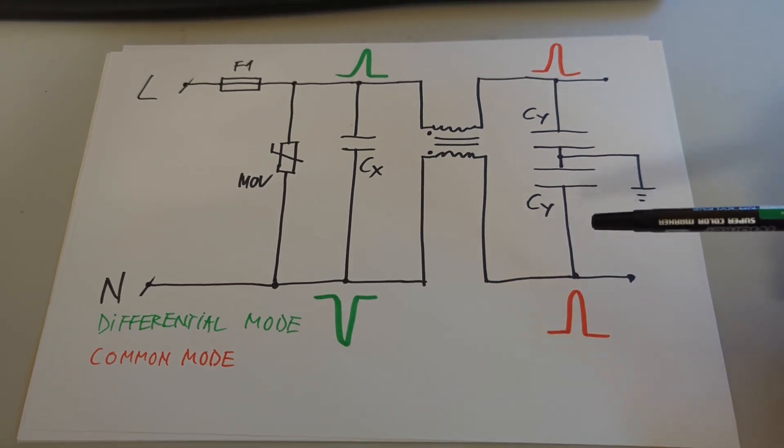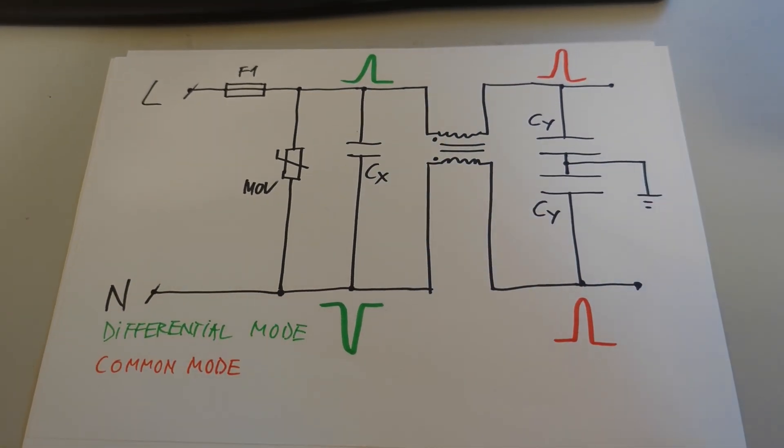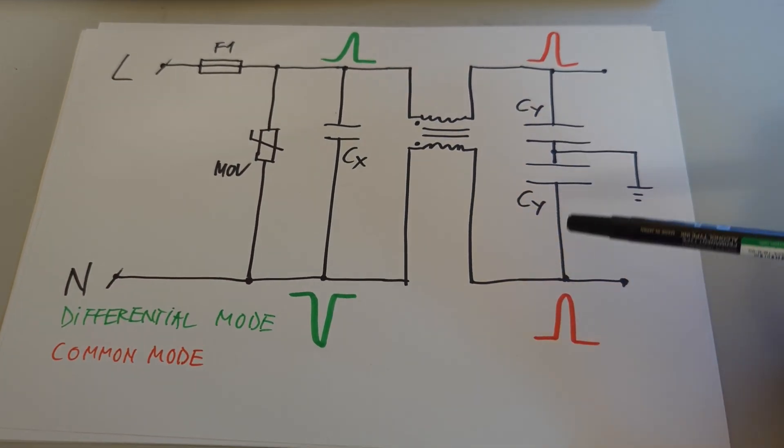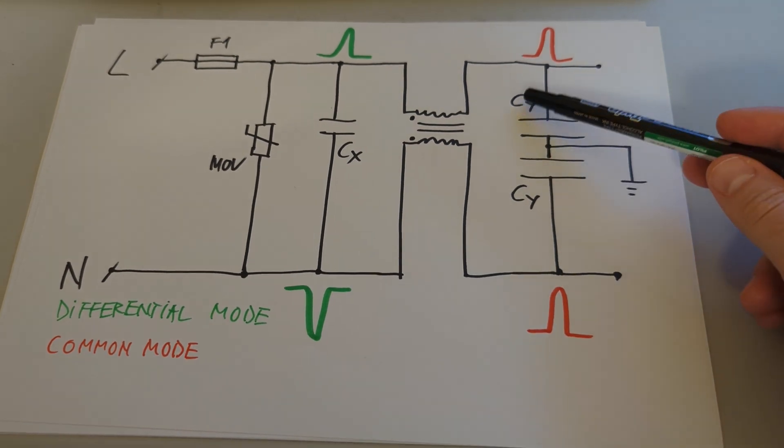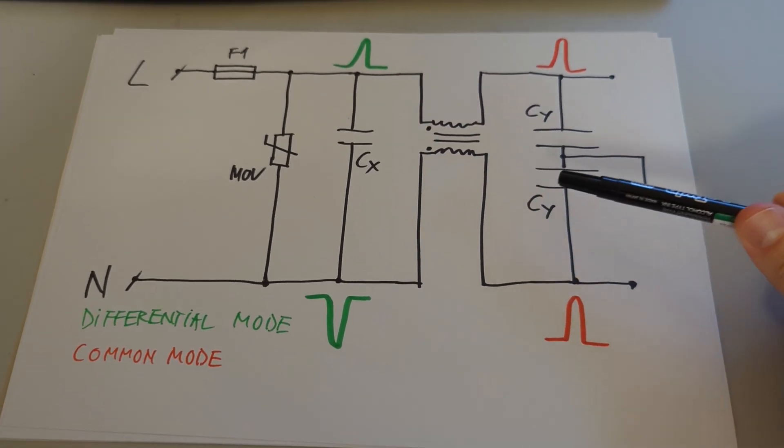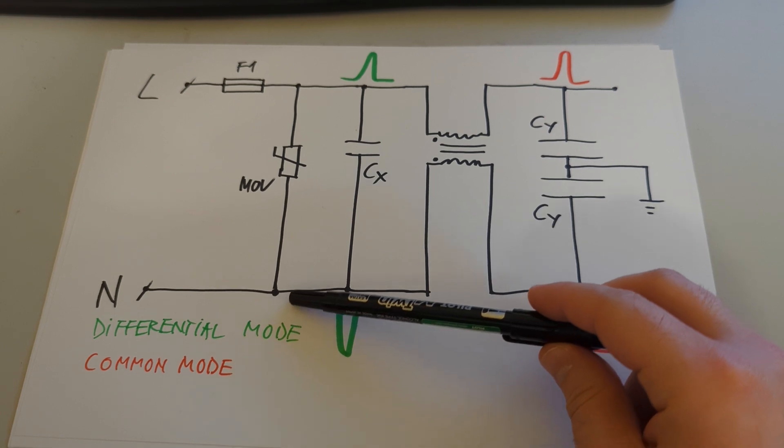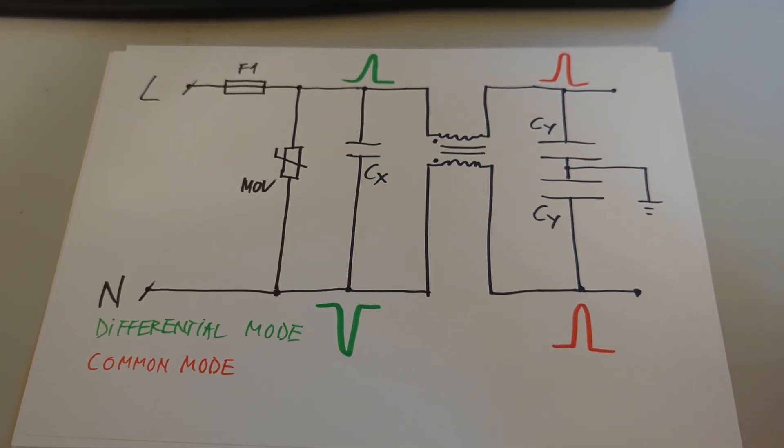So as you can see, this is common mode, so both live and neutral go, let's say, up at the same time. And these are shunted to ground by the class Y capacitors. So in theory, the filter as a whole could take care of differential mode noise and common mode noise as well.